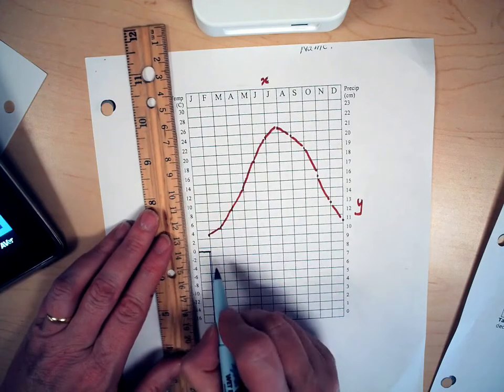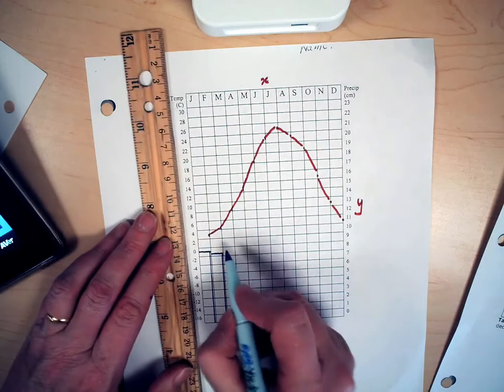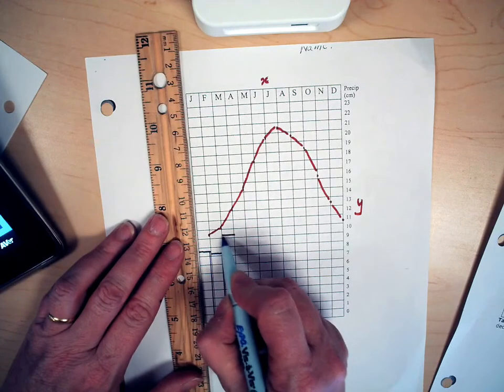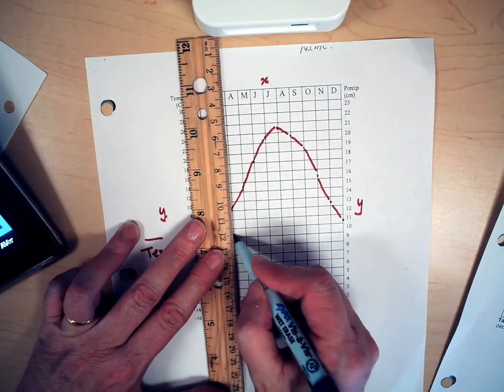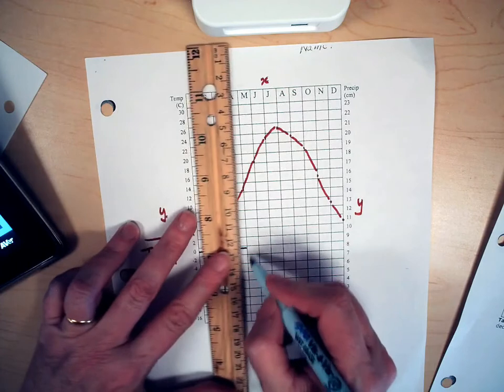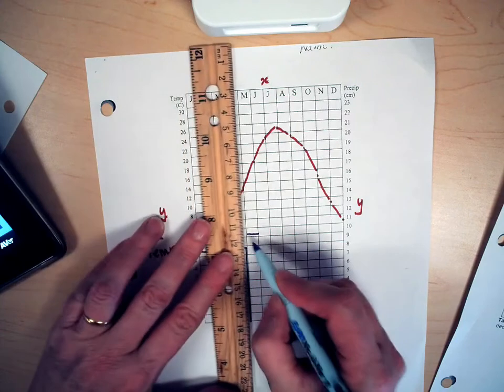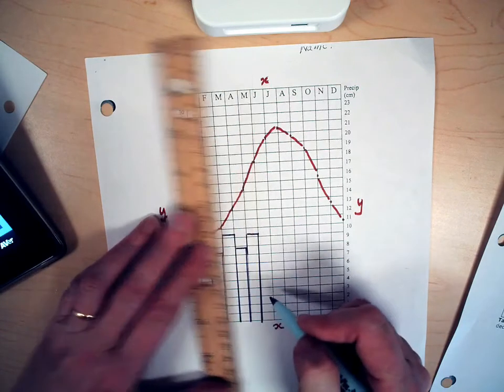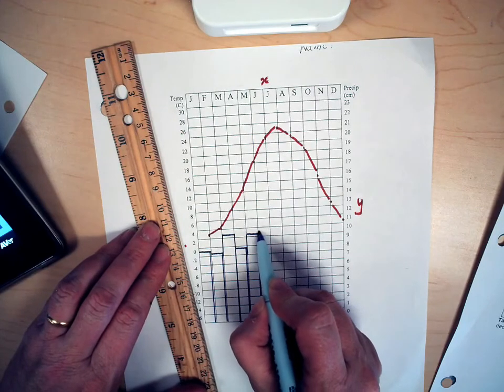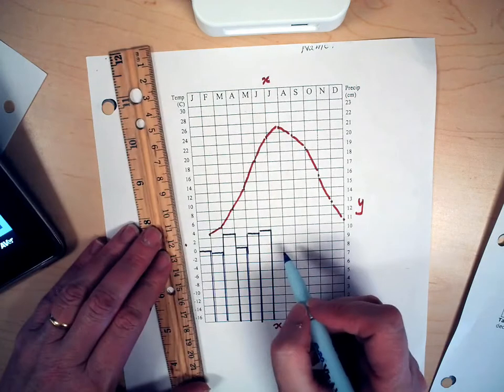It's 8.4 for February. 8.5 for February, 9.5. 7.9, 9.1, 9.6, 11.7.